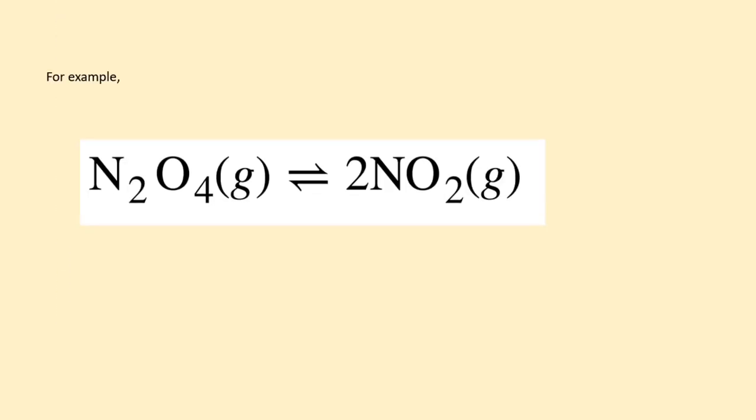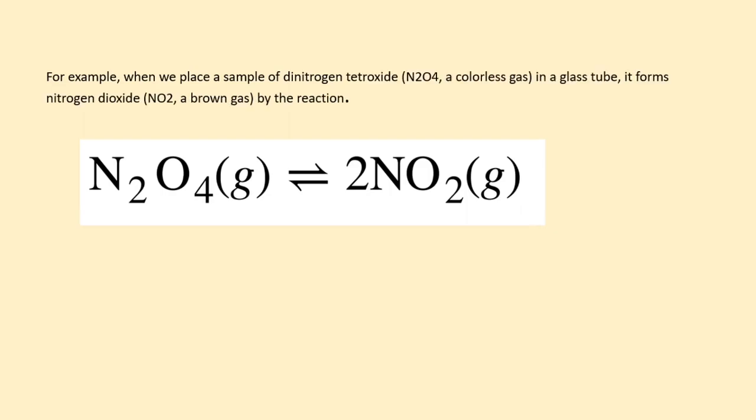For example, when we place a sample of dinitrogen tetroxide (N2O4), a colorless gas, in a glass tube, it forms nitrogen dioxide (NO2), a brown gas, by the reaction.